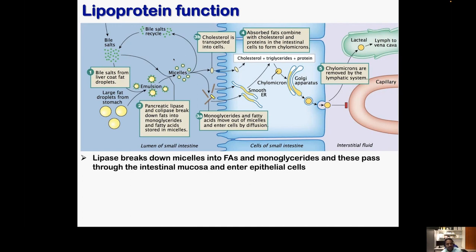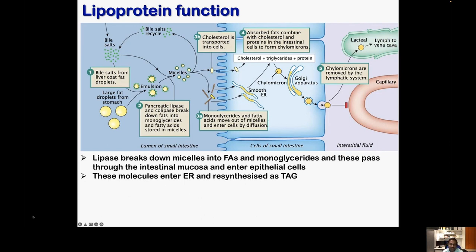Lipid droplets on their own cannot be digested by pancreatic lipase — we need bile salts. Bile salts bind to the lipid droplets making them accessible to hydrolytic enzymes. The lipase enzyme then digests these molecules, releasing free fatty acids, monoglycerides, glycerol, and also digesting cholesterol esters into cholesterol and free fatty acids. These molecules will then go inside the intestinal mucosa or intestinal epithelium.